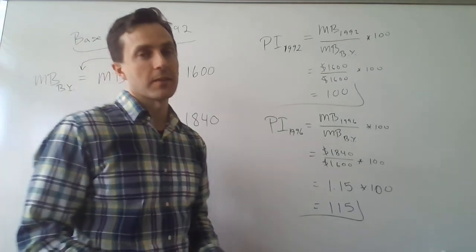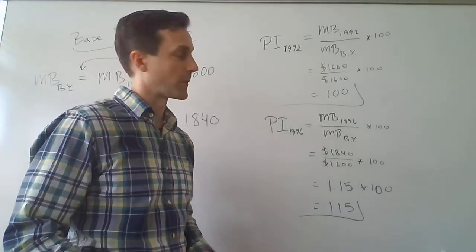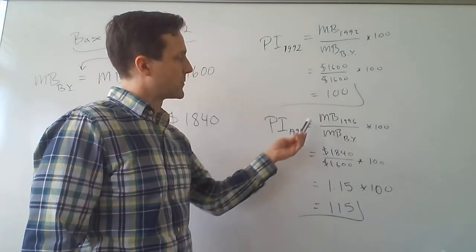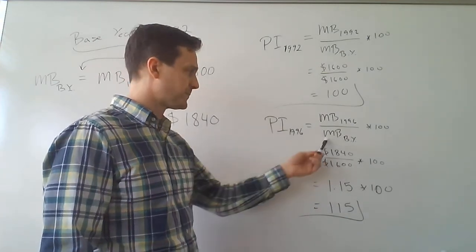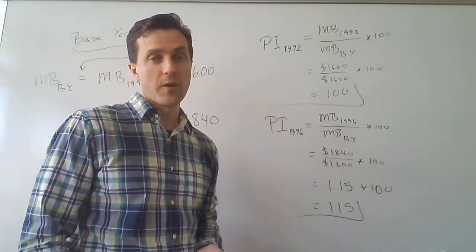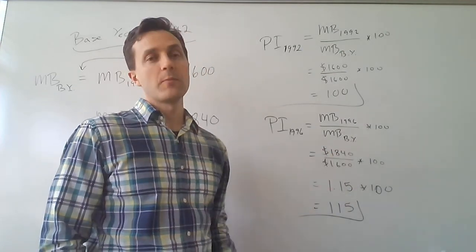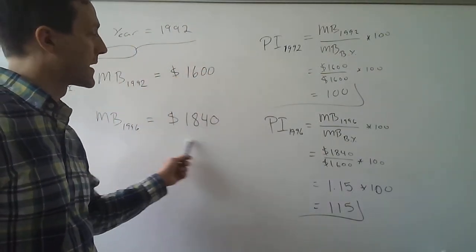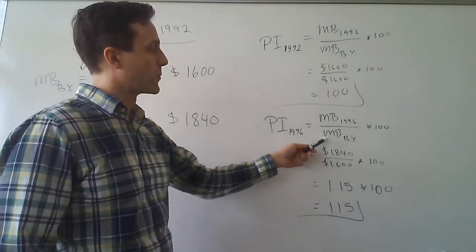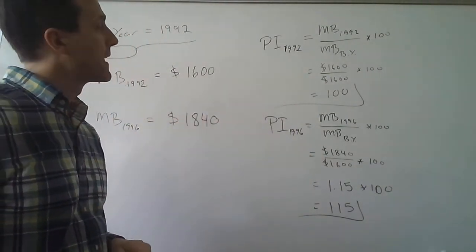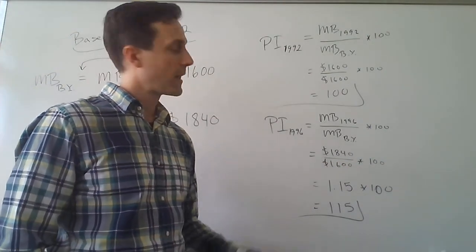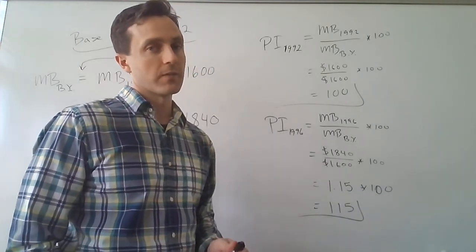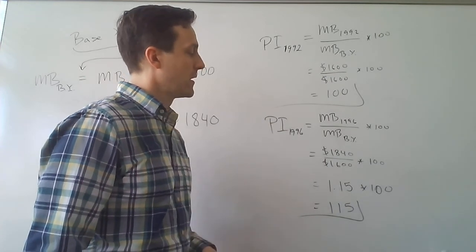A little more interesting is calculating the value of the price index for other years besides the base year. For 1996, the value of the price index is equal to the value of the market basket in 1996 divided by the value of the market basket in the base year, multiplied by 100. So it's $1,840 divided by $1,600, times 100. That equals 1.15 times 100, which is 115. The value of the price index went up to 115.